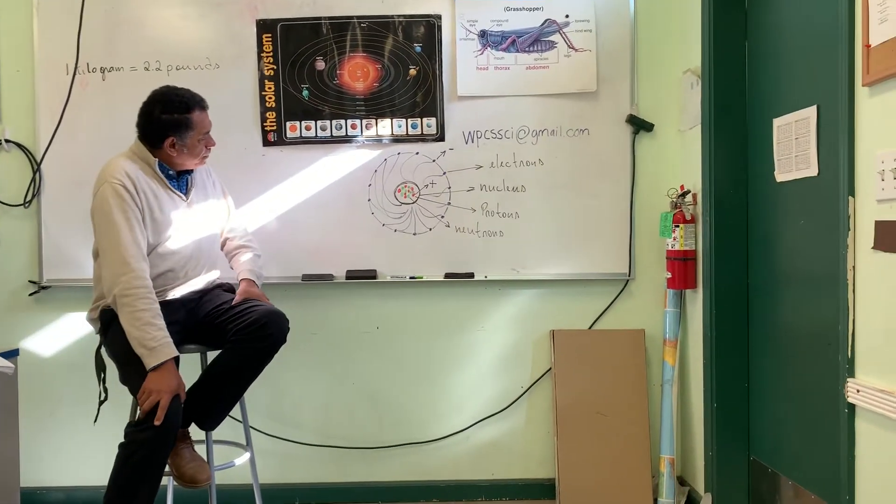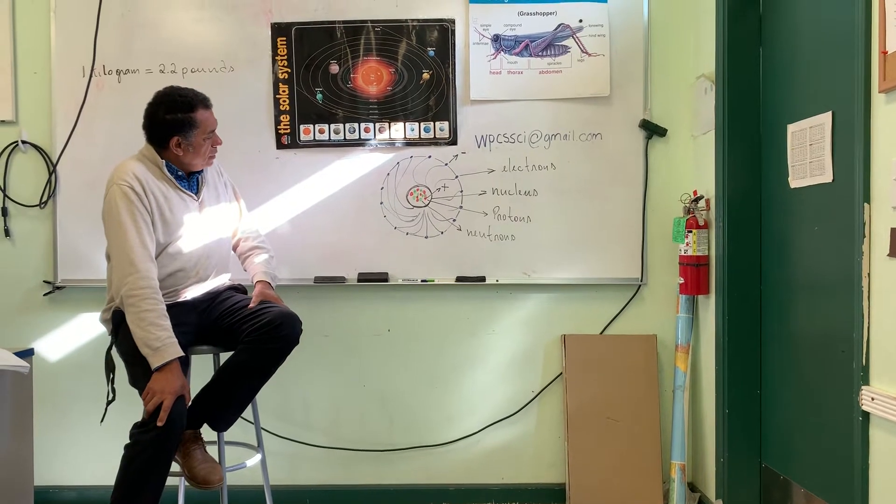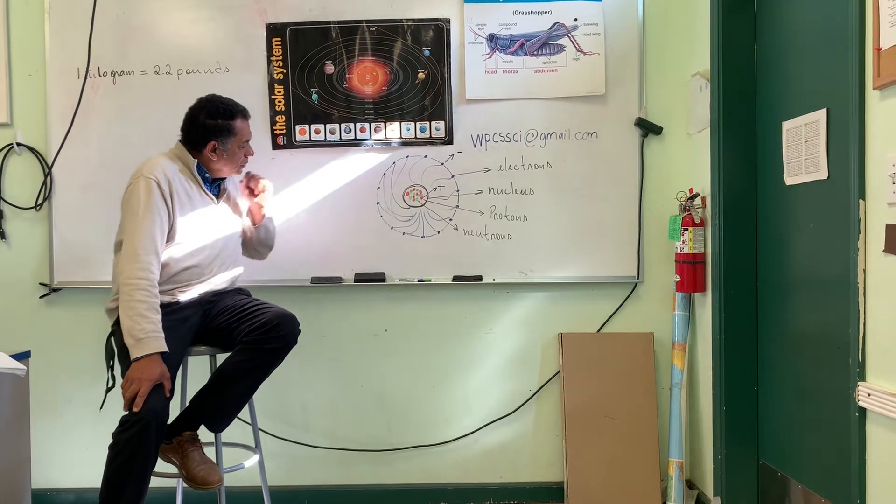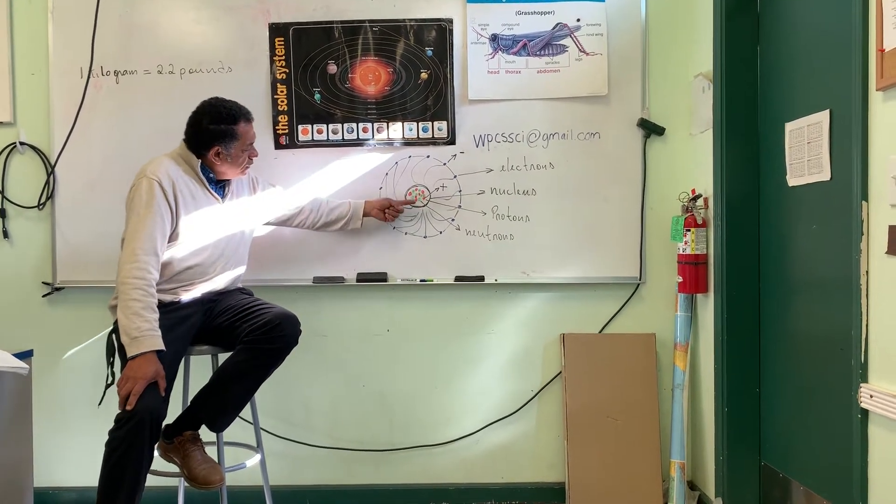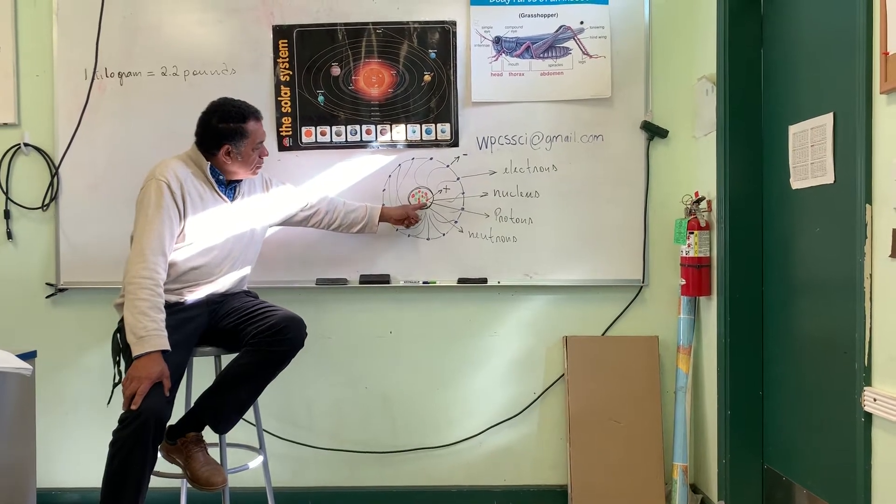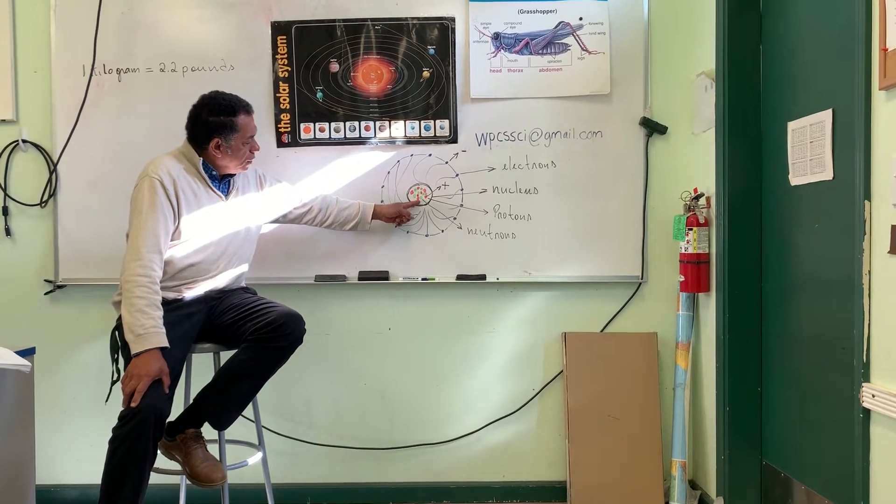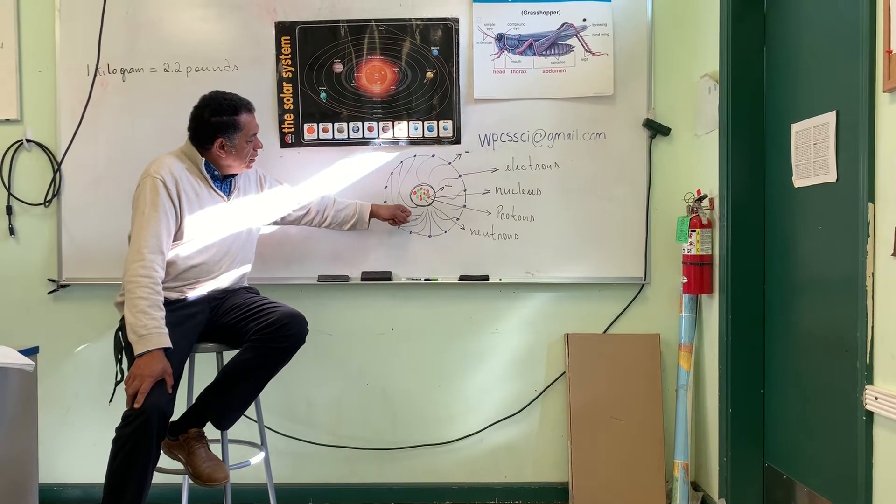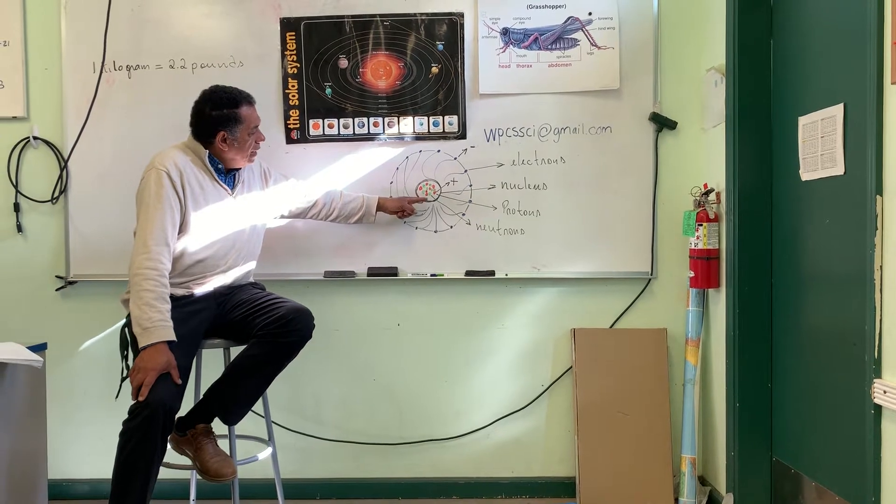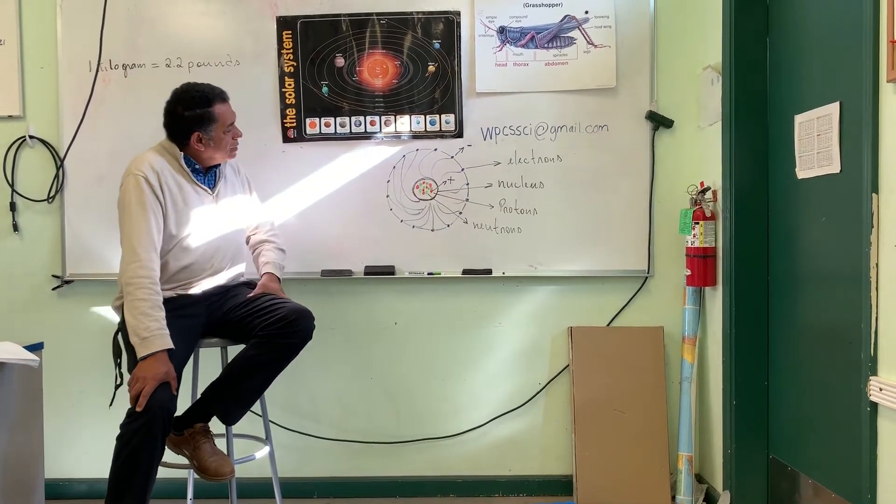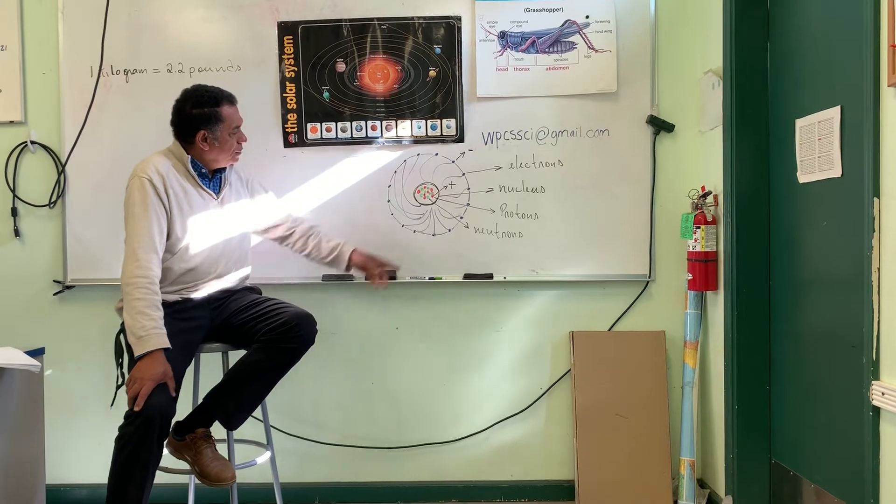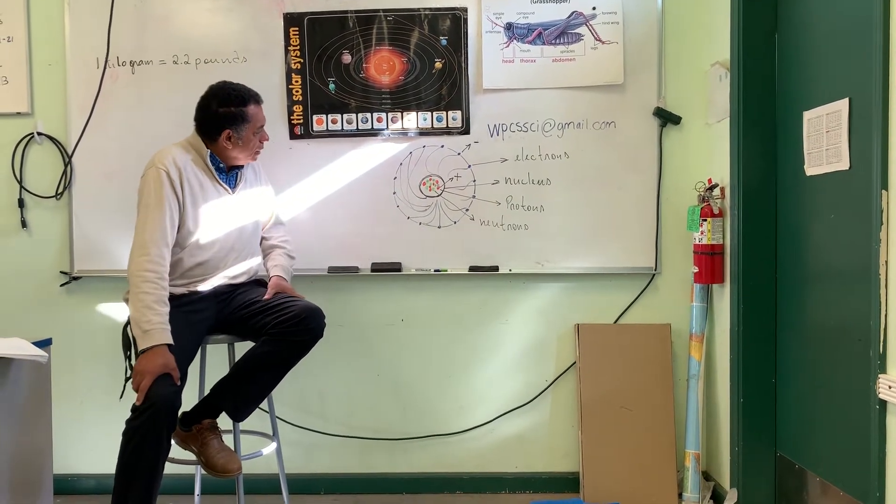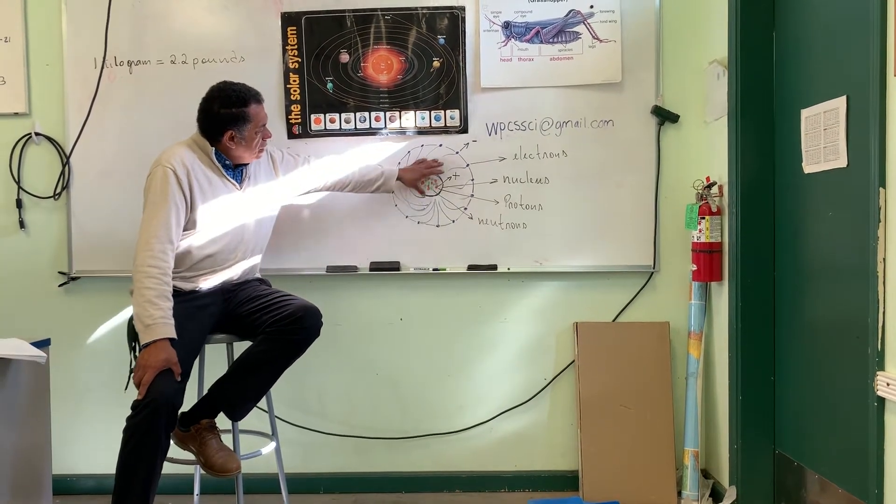The atom - you have in the center of the atom the nucleus. Inside the nucleus you have the protons and you have the neutrons. I'll put it here in red, protons, and the green, neutrons, all inside the nucleus. The protons have positive charge, positive. The neutrons have no charge, is neutral.